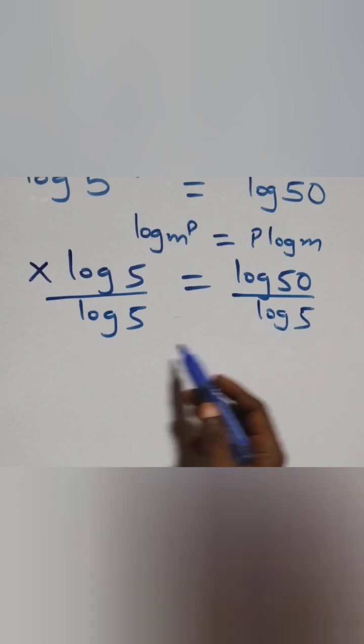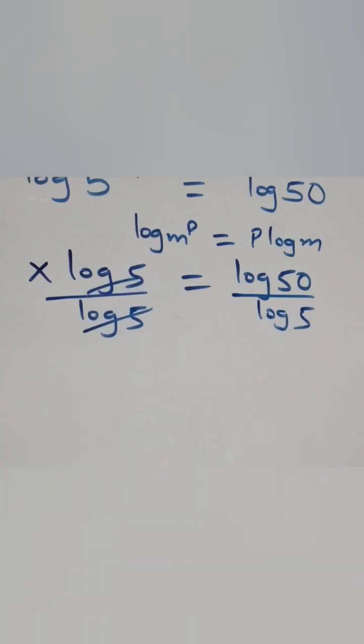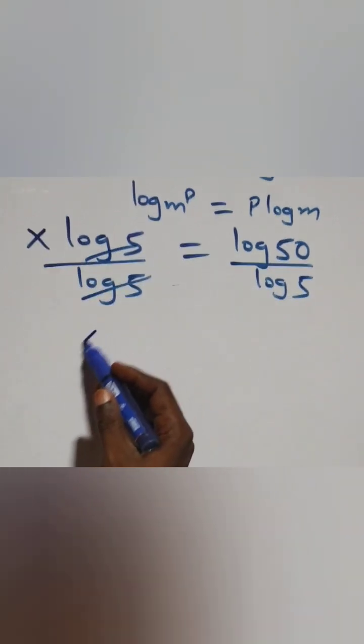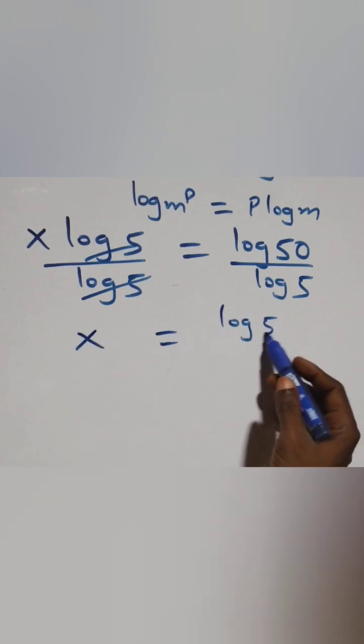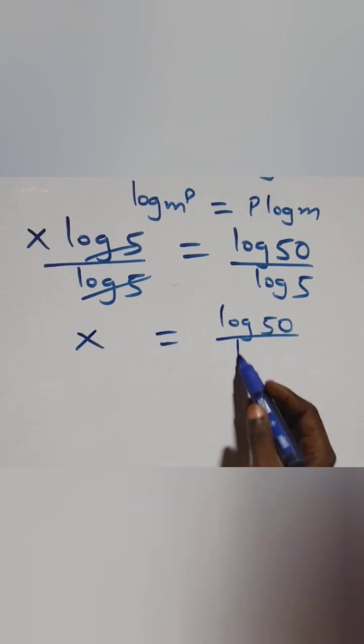At this, here log 5 cancelled each other. And we have x left, which is equals to log 50 over log 5.